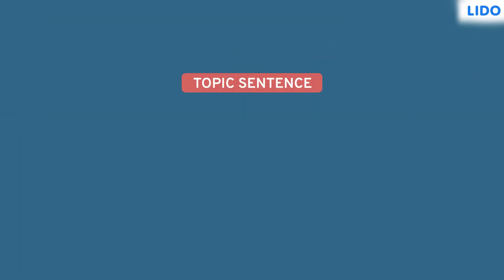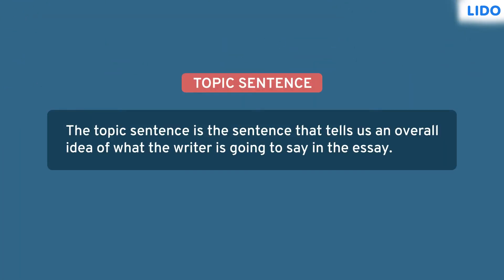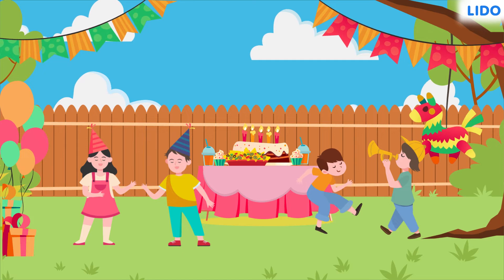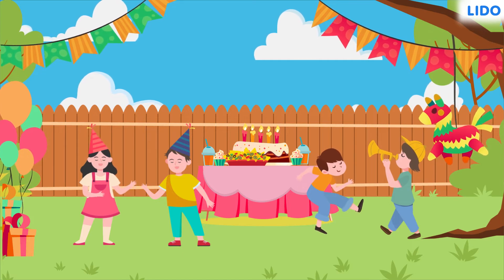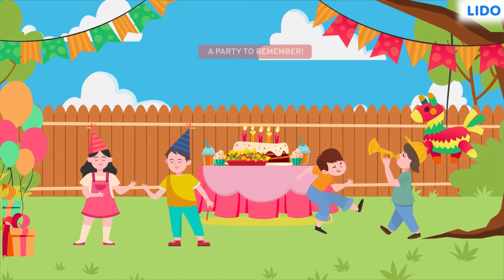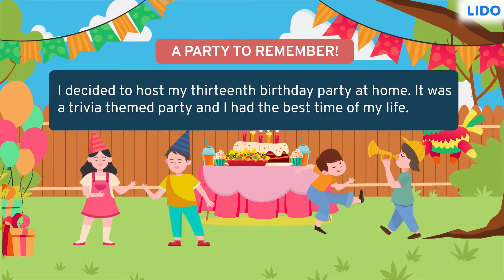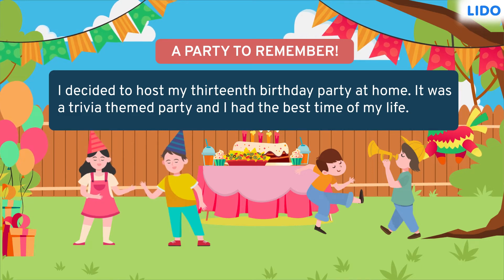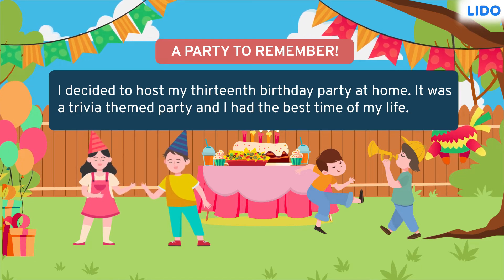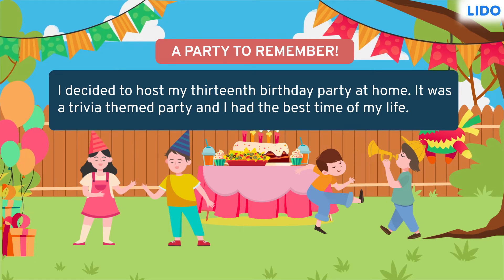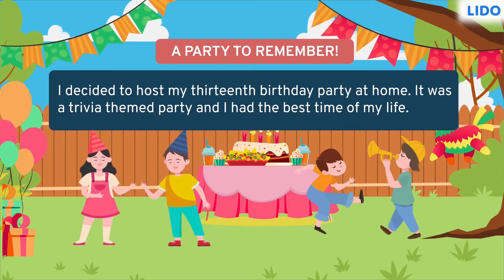The first step to writing a descriptive essay would be to frame a topic sentence that gives the reader a gist of what the writer is going to speak about in the essay. It should also support the title of the essay. Raj had named his essay 'A Party to Remember.' The topic sentence he chose was: I decided to host my 13th birthday party at home. It was a trivia themed party and I had the best time of my life.